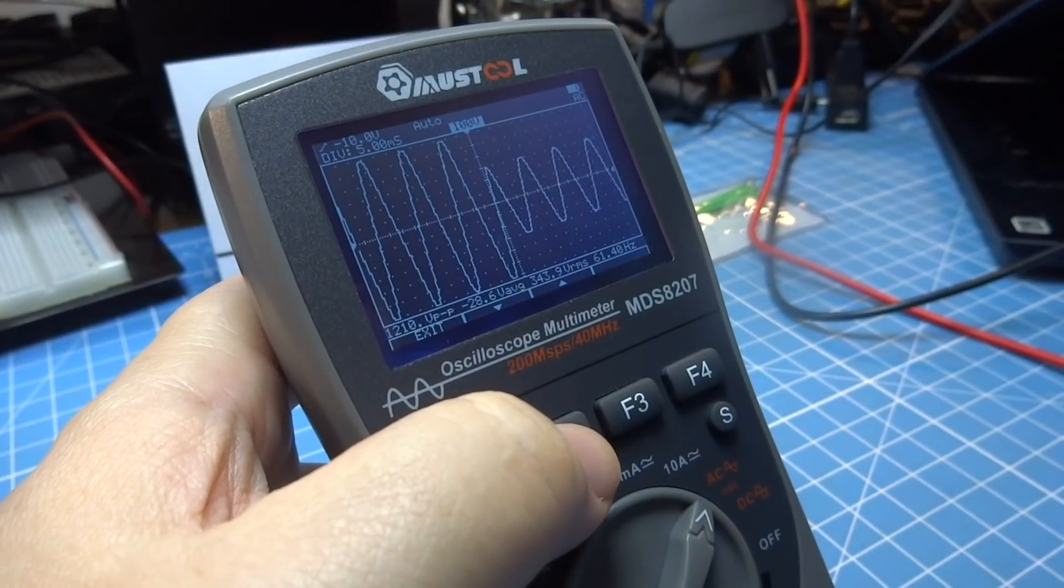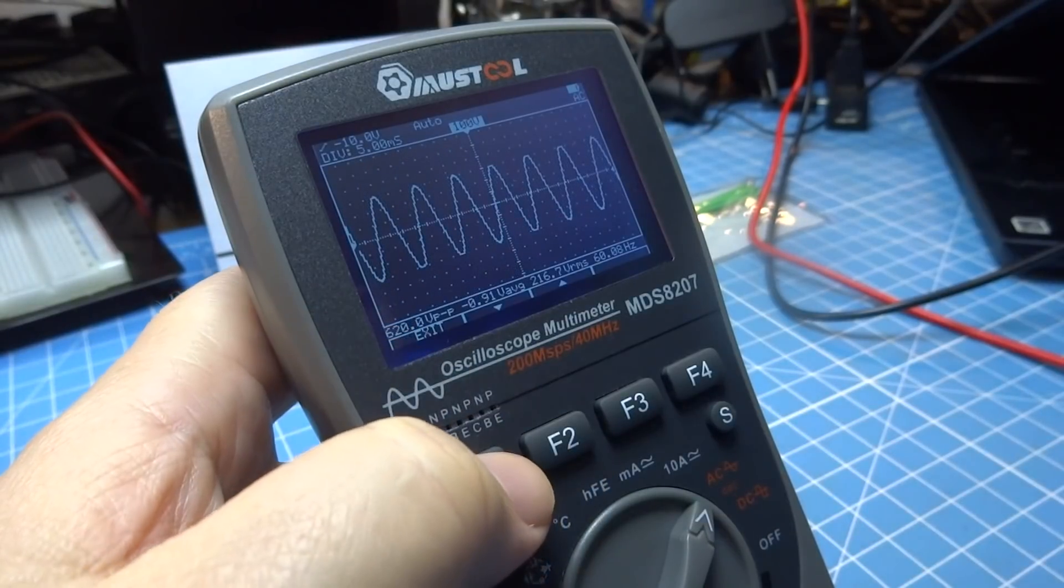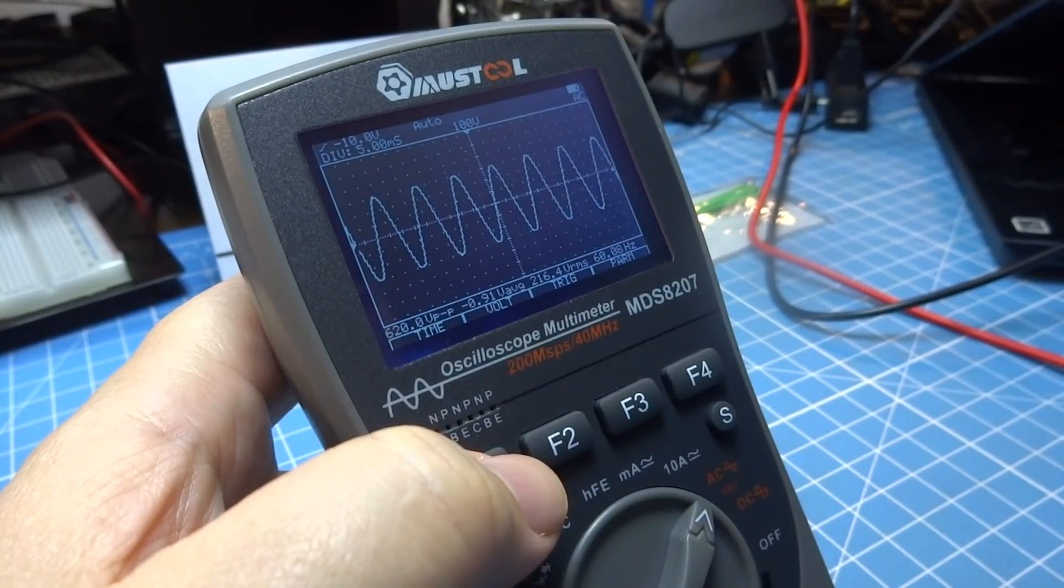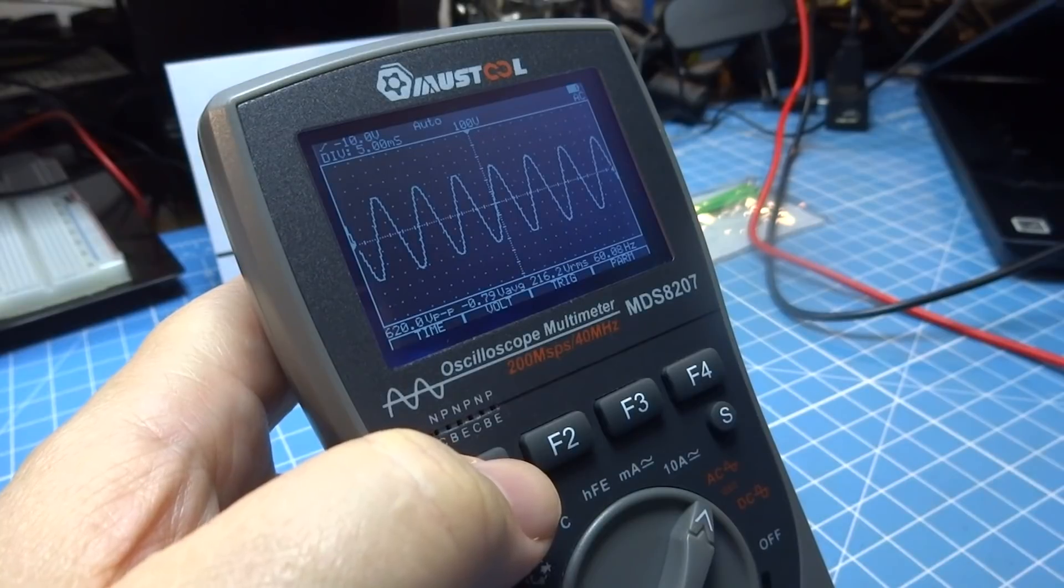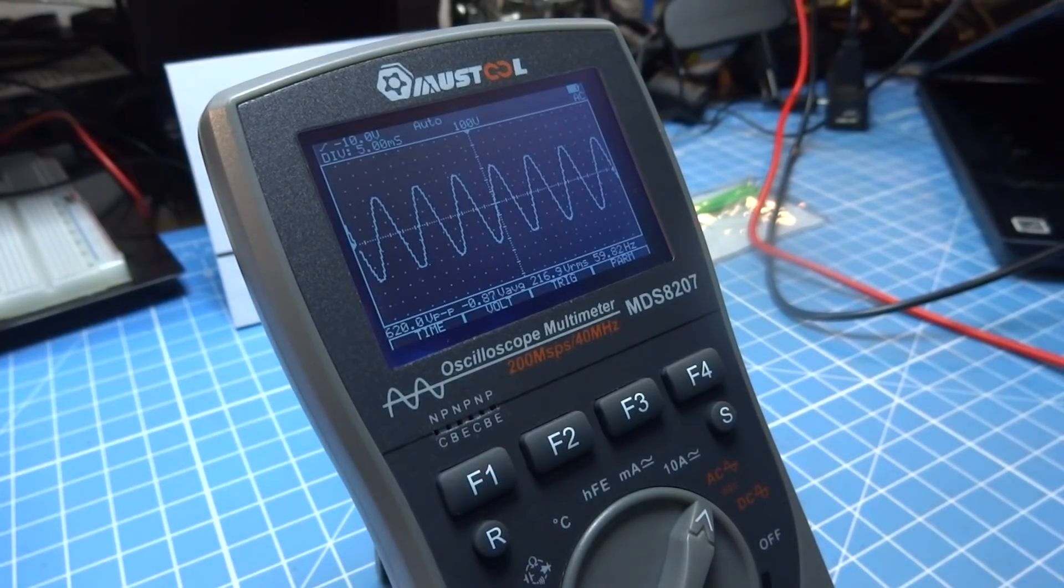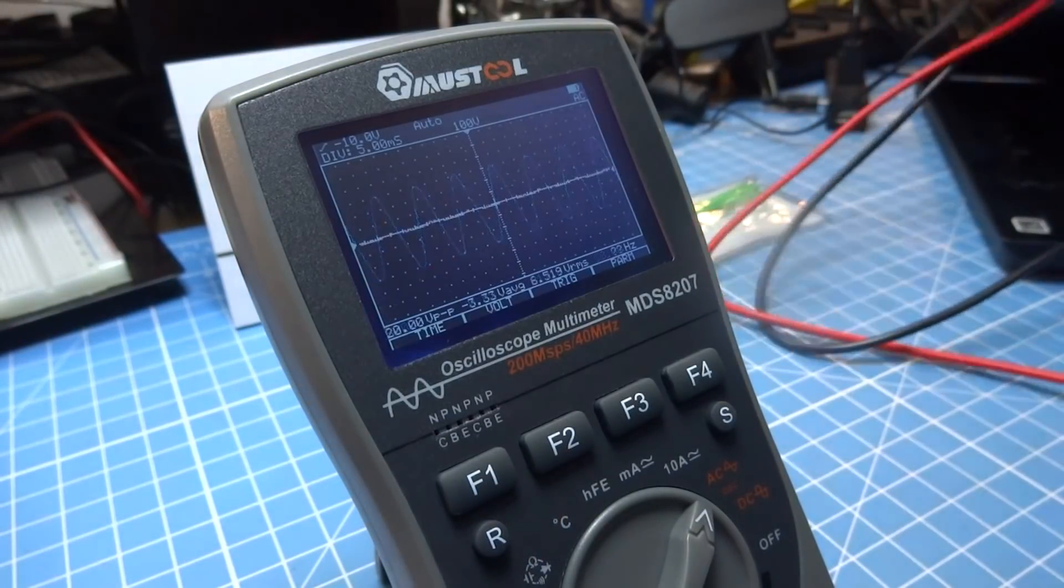Para a opção osciloscópio, a tela é aceitável, comparável a outros osciloscópios portáteis. Mas sem dúvida, uma tela LCD colorida seria bem-vinda neste equipamento. Quem sabe numa próxima versão.